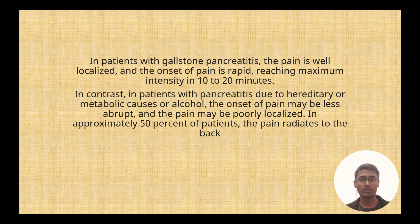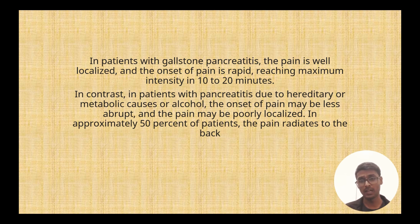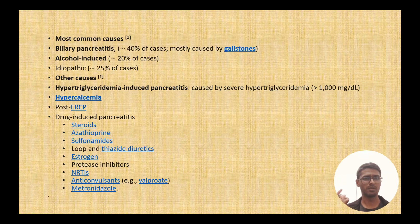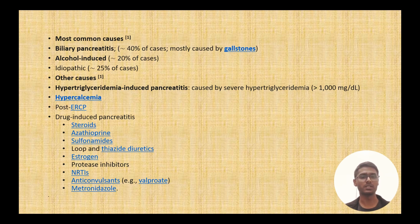Taking a history from a pancreatitis patient is very pivotal because the history can tell you the cause. The causes are different — gallstone and alcohol-induced pancreatitis are the most common. Gallstone pancreatitis typically presents with severe, localized pain that peaks within 10 to 20 minutes, whereas alcoholic pancreatitis tends to be more insidious. The most common causes to remember are gallstone, alcohol, and idiopathic — together accounting for about 85 percent of cases — followed by hypertriglyceridemia, hyperglycemia, and post-ERCP pancreatitis.